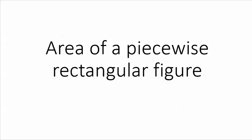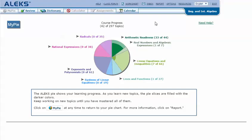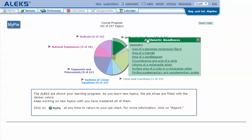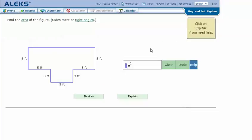Area of a piecewise rectangular figure in your ALEKS pie. Mouse over the green slice arithmetic readiness to reveal the drop-down list of topics you need to cover. Click on area of a piecewise rectangular figure. Find the area of the figure.